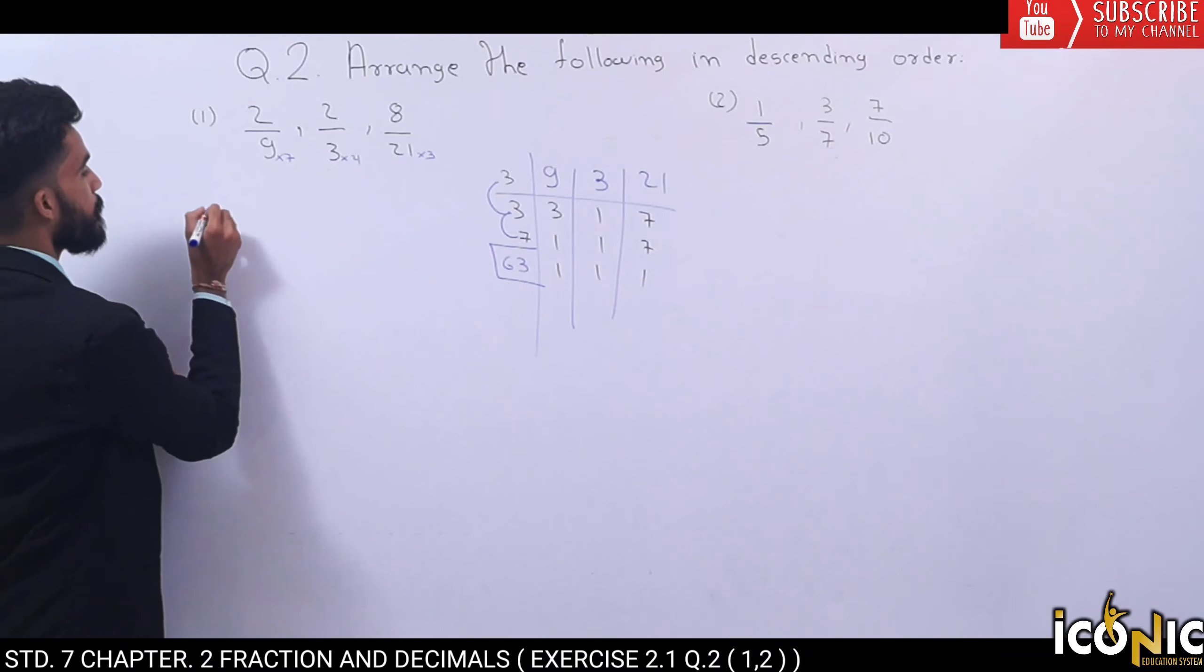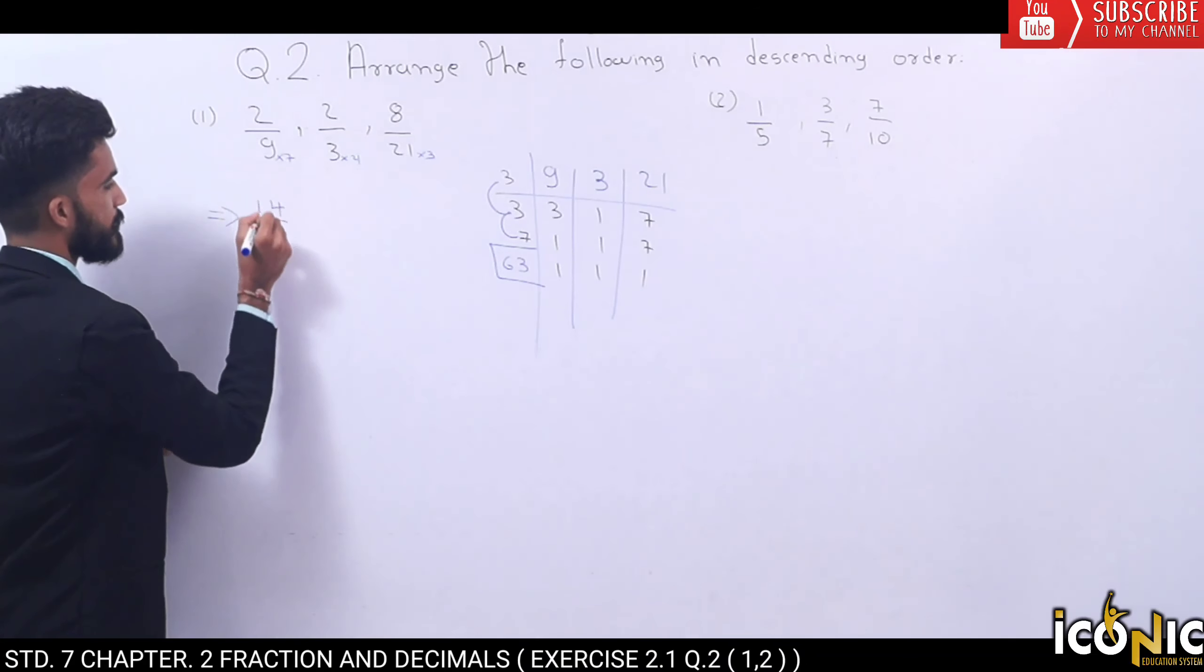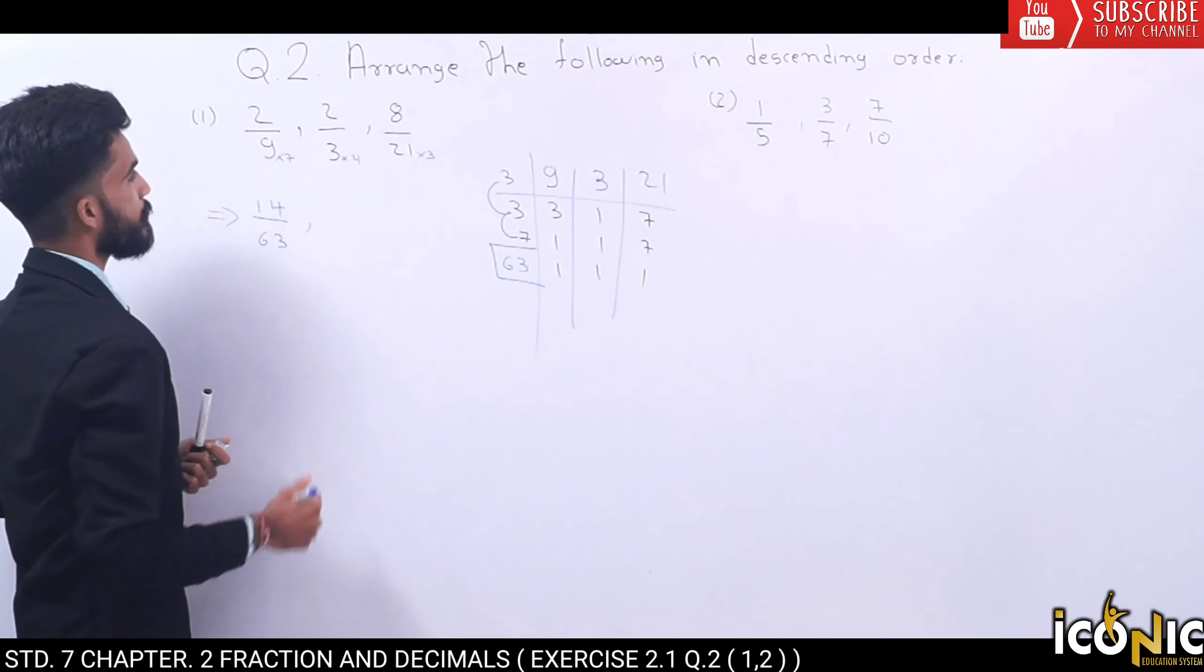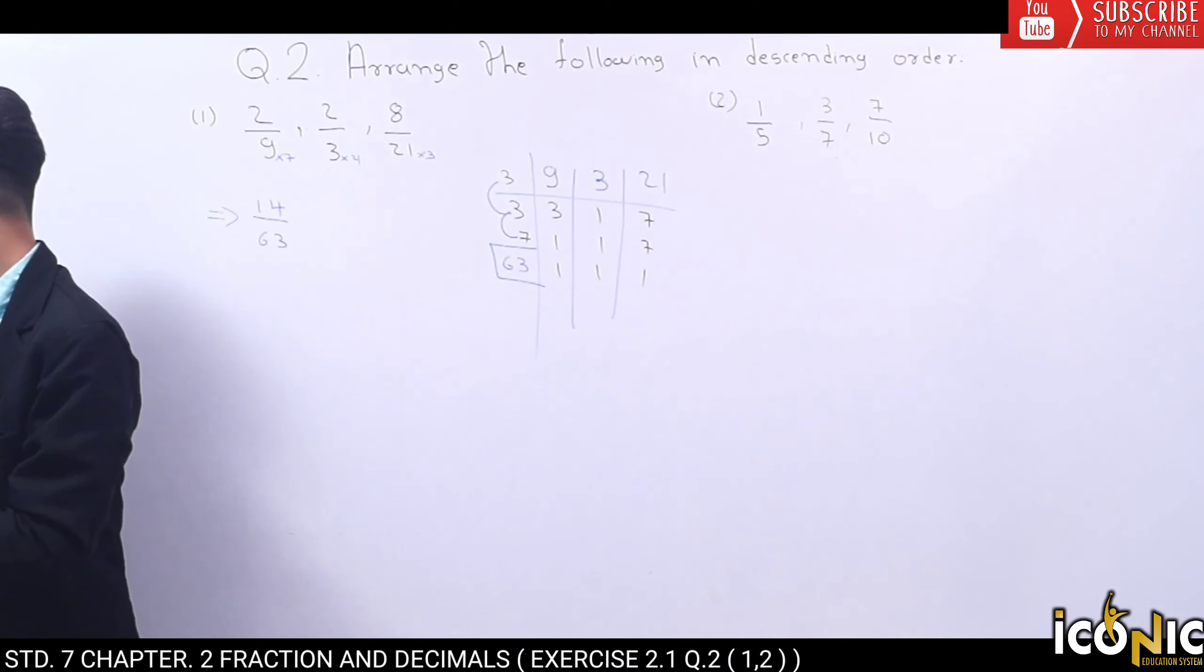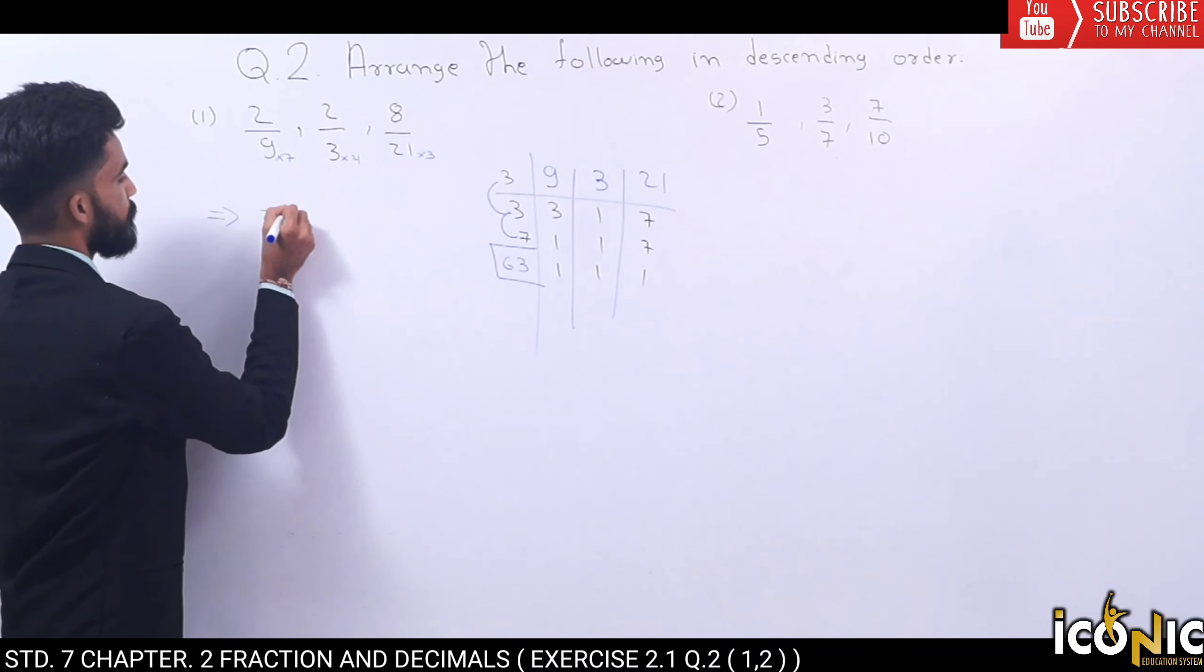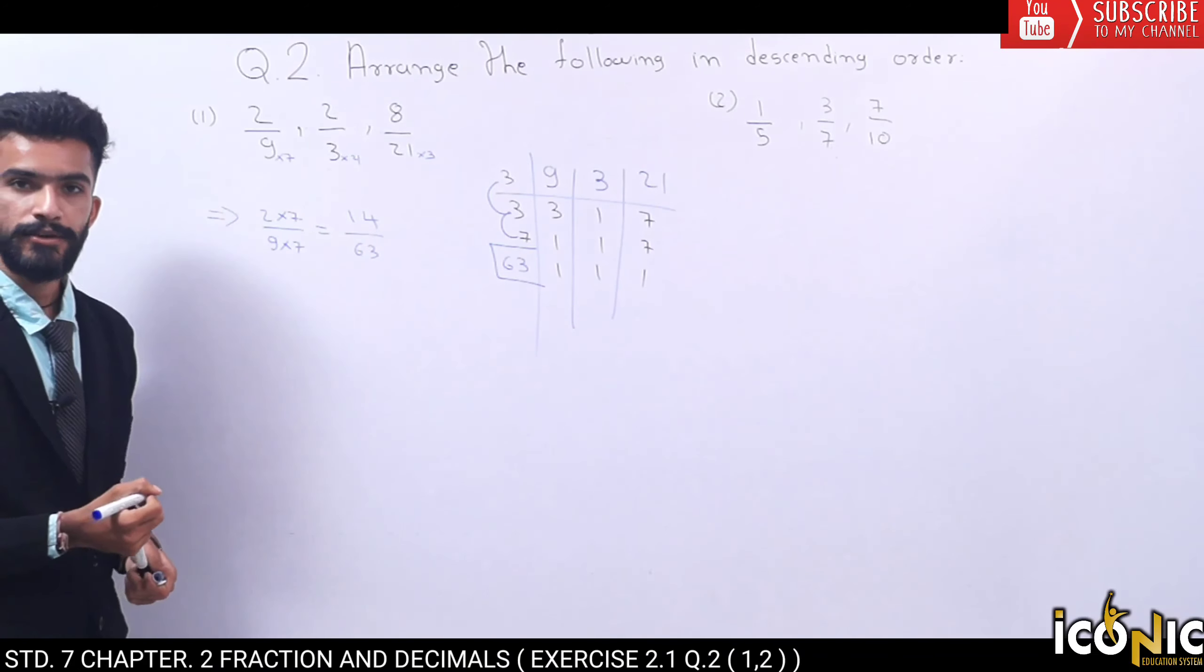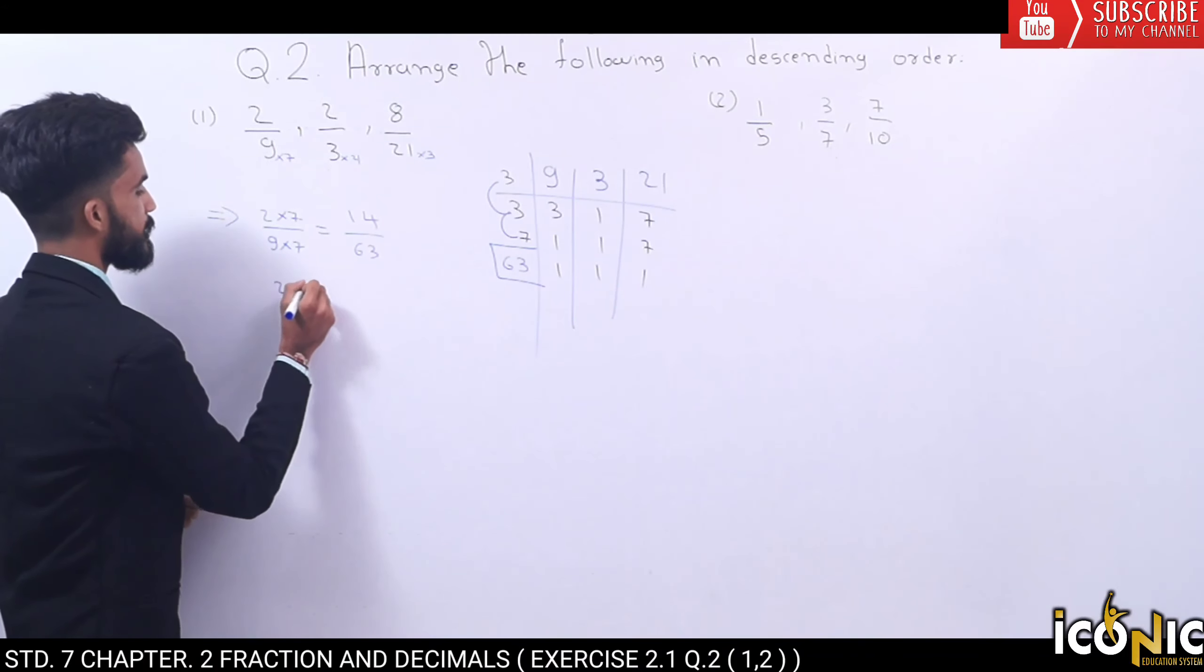Now we will multiply. 2 multiplied by 7 upon 9 multiplied by 7 is equal to 14 by 63. This whole step is 2 by 9 equals 2 multiplied by 7, which gives 14 by 63.